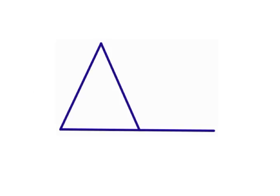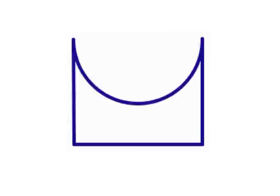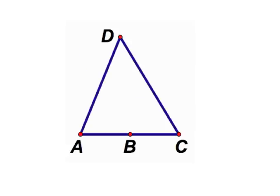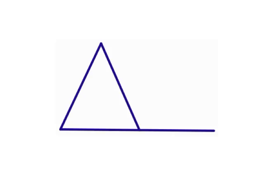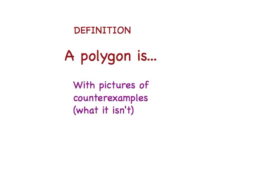Everybody! A polygon is a closed figure with three or more co-planar segments called sides. Two sides with the common end points are non-collinear. Each side intersects exactly two sides, but only at the end points. Only at the end points. Thank you.